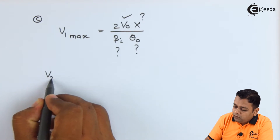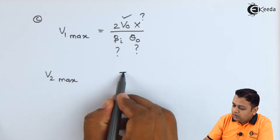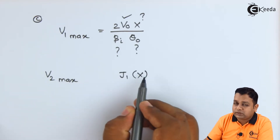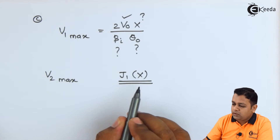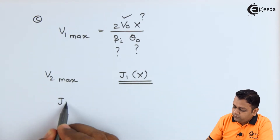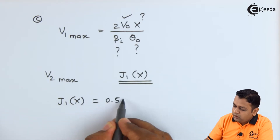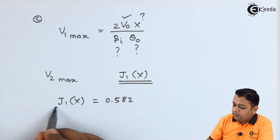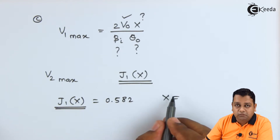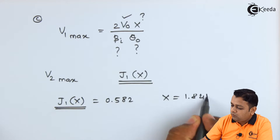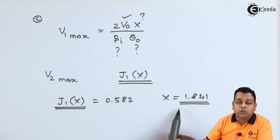For maximum V2, it is required that J1 of capital X should also be at the maximum value. This is the representation of the Bessel's function. The maximum value of J1(X) is 0.582, and this maximum value of the Bessel's function is obtained when the bunching parameter X is equal to 1.841. So in this equation, the value of X can be substituted as 1.841.